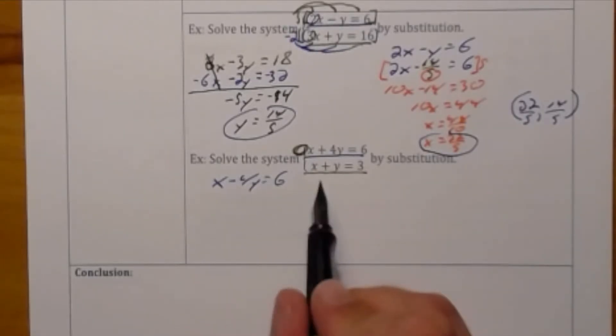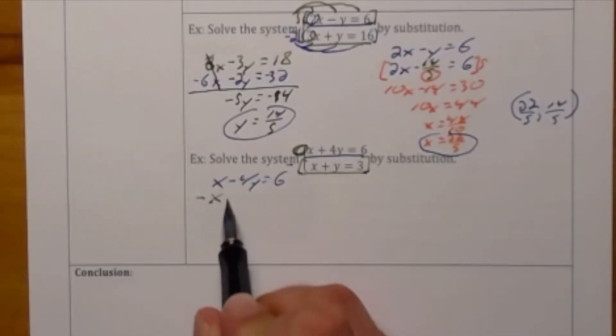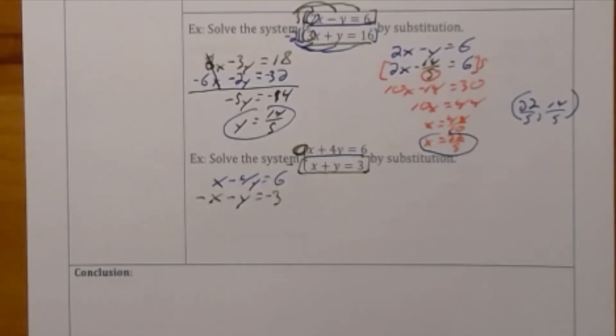But the bottom equation I'm going to multiply by negative 1 because I see nothing in front of x on top which means there's a negative 1, giving me a new equation of negative x minus y is equal to negative 3.